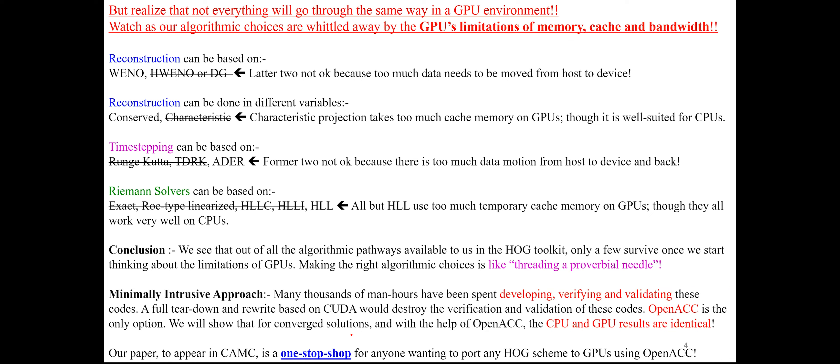Looking at the available choices consistent with GPU limitations — namely very small main memory, very small caches, and expensive CPU-to-GPU data movement due to low bandwidth — you can read all the details in the paper, so I won't belabor this too much.